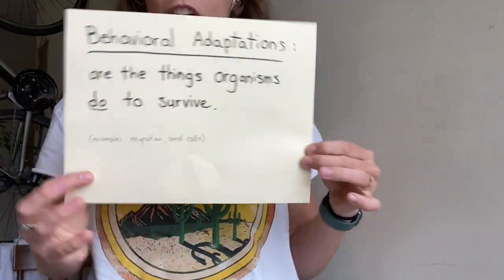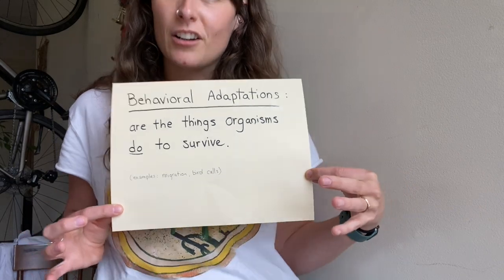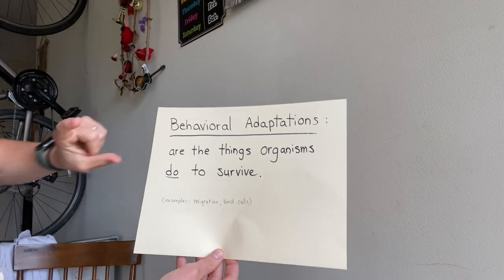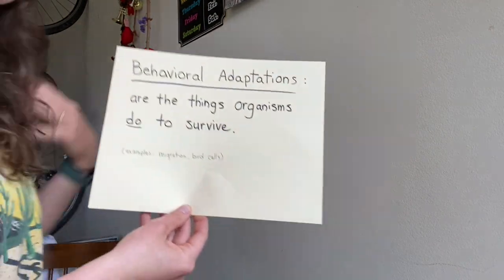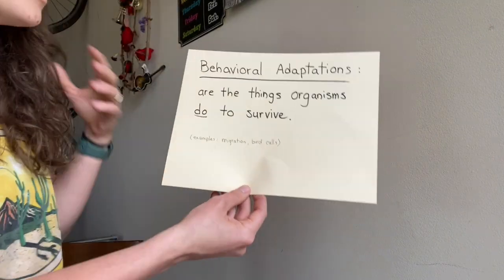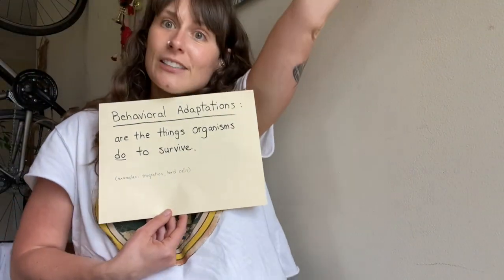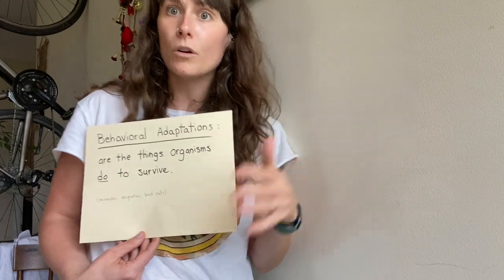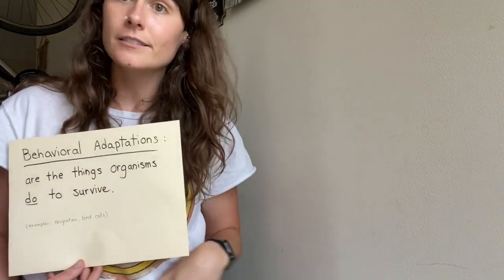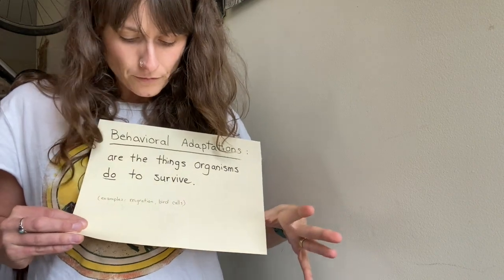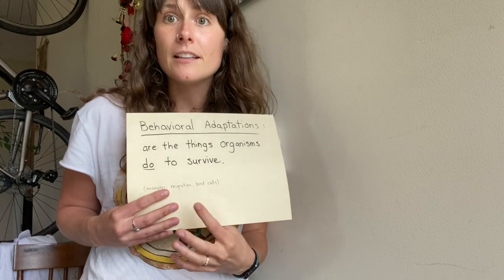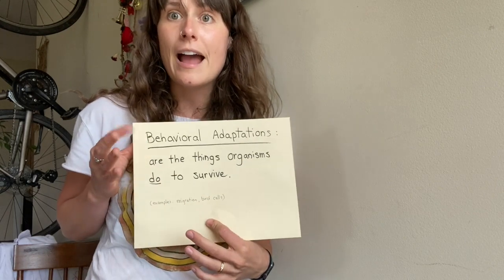Now we're going to talk about behavioral adaptations, and I'll give you a couple of examples of that as well. Behavioral adaptations are things that organisms do to survive — so it's actions that they do. An example of that would be migration. You guys have seen geese fly through the sky from north to south in the spring, or vice versa when winter is coming. Also something like a bird call — birds make different calls to communicate with each other, and they change these calls. That's a behavioral adaptation.